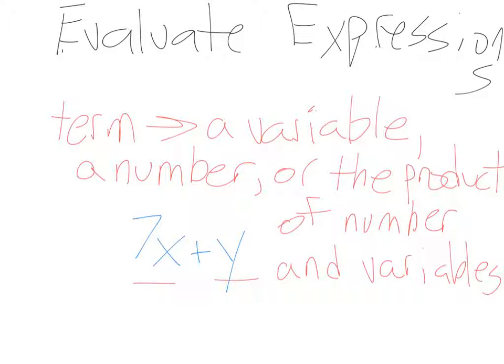So, or the product of number and variables. Okay, so, you know, for instance, right, this seven x here, that's seven times x, right? Okay, so we have one term, and then another term. So how are terms broken up? By, like, multiplication. That's something separate.